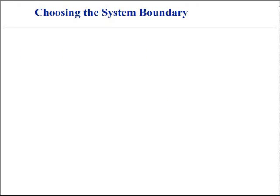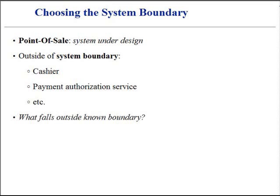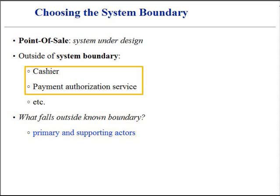For our case study, the point-of-sale system itself is the system under design. Everything outside of it is outside of the system boundary, including the cashier, the payment authorization service, and so forth. If not immediately clear, defining the boundary of the system under design can be clarified by defining what falls outside the known boundary. The external primary and supporting actors are outside. Once the external actors are identified, the boundary becomes better outlined.